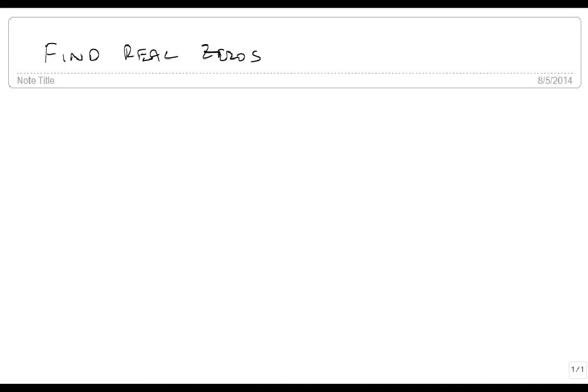Let's look at one more case of finding real zeros. We're going to look at P(x) equals x cubed plus 5x squared minus 8x plus 2.